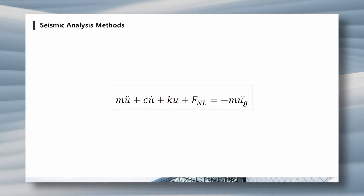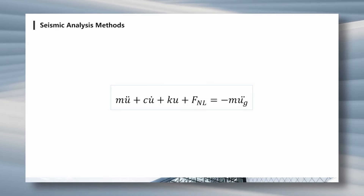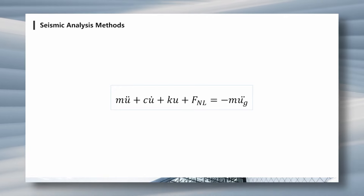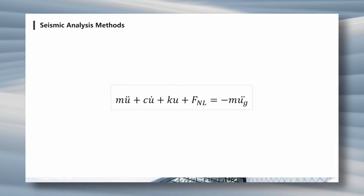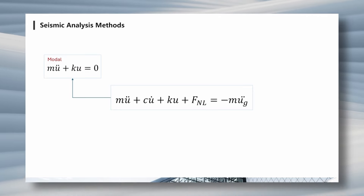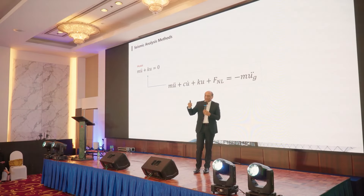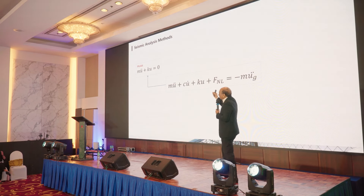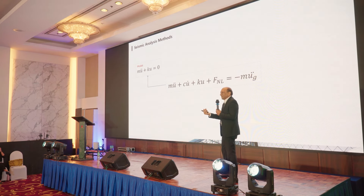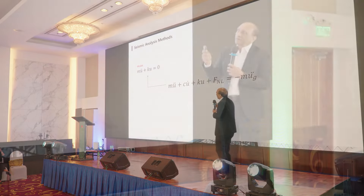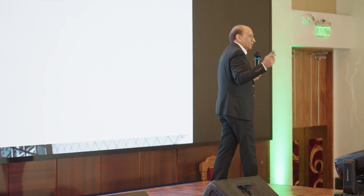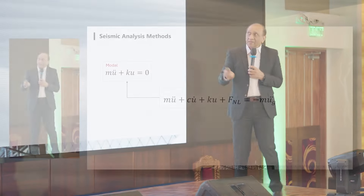Since engineers had the equation but not the solution, they asked: how can we simplify this? The first simplification was to remove everything except mass and stiffness set equal to zero, giving the natural response — the eigenvalue problem. You can solve for mode shapes and natural periods. This does not depend on damping, damage, or external force — just the natural property of the system.